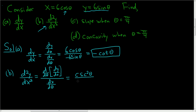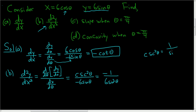dx/dθ — we found that already — is negative 6 sine θ. Since cosecant squared is 1 over sine squared, we can write this as negative 1 over 6 sine cubed θ, because cosecant squared θ is 1 over sine squared θ. And that is the second derivative of y with respect to x.